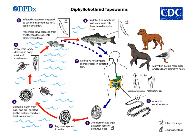This is the life cycle of Diphyllobothrium tapeworms. The parasite is located in the small intestine of different final hosts. A single parasite can produce 100,000 eggs per day — the adult parasites are highly prolific. These eggs in the gravid proglottids are passed through the feces.